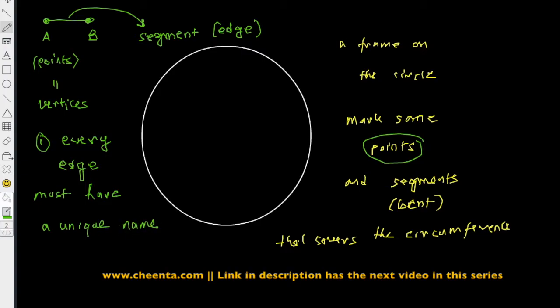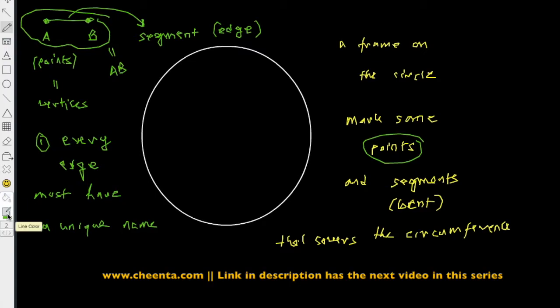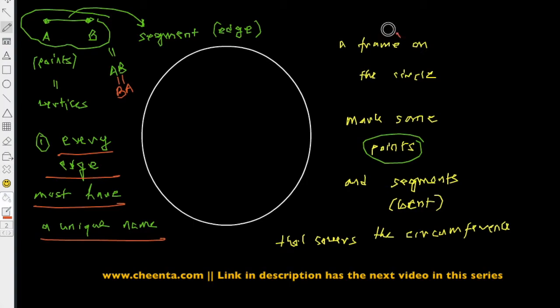We cannot have two edges named AB. The name of this edge is AB, which tells you what the vertices of the edge are. We do not allow both AB and BA, because AB and BA are the same thing. So every edge must have a unique name.